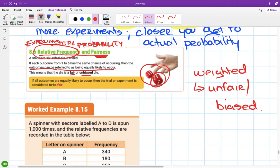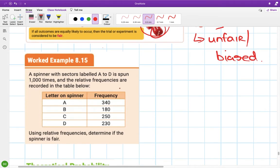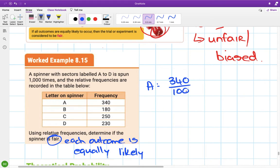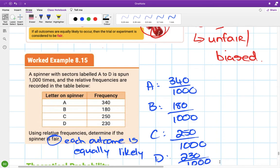So it's only considered fair if each outcome on the dice or each side of the coin is equally likely. We'll have a look at a little example. A spinner with sectors labeled A to D is spun a thousand times and the relative frequencies are recorded in the table. Using relative frequencies, determine if the spinner is fair. Remember it's only fair if each outcome is equally likely. So let's do each outcome. A appeared 340 times out of a thousand, B appeared 180 times out of a thousand, C appeared 250 times out of a thousand, and D appeared 230 times out of a thousand.